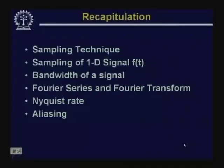Hello, welcome to the course on digital image processing. In the last class, we have seen different sampling techniques, particularly the sampling of a one-dimensional signal f which is a function of a single variable t. We have also talked about what is meant by the bandwidth of a signal, and to find out the bandwidth, we made use of mathematical tools like Fourier series and Fourier transform.